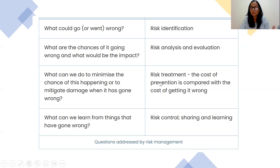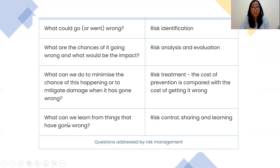Then you have to find out the problem behind the incident and the solution. That is called risk treatment: what can we do to minimize the chance of this happening or to mitigate damage when it has gone wrong? And lastly, when you identify the solution, you share it with other stakeholders so they can be aware and learn from it to prevent the incident in future. That is called risk control: what can we learn from things that have gone wrong? So the four steps are: risk identification, risk analysis and evaluation, risk treatment, and risk control.